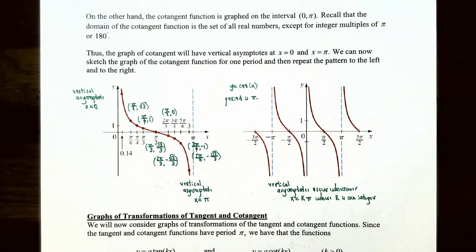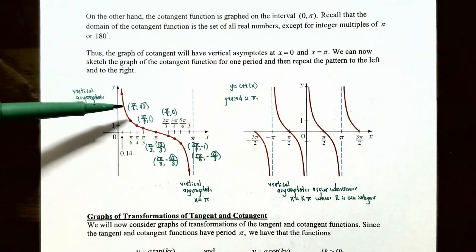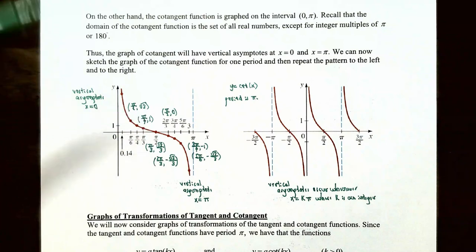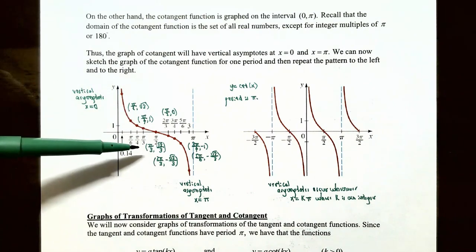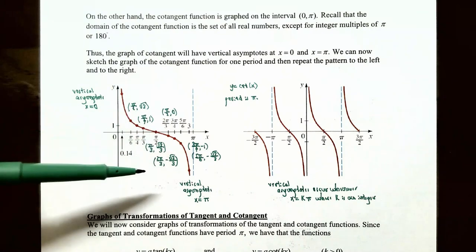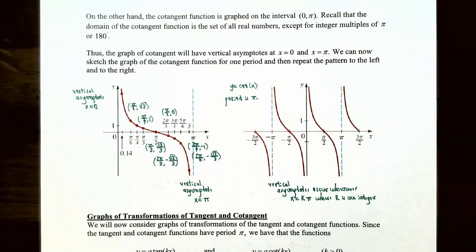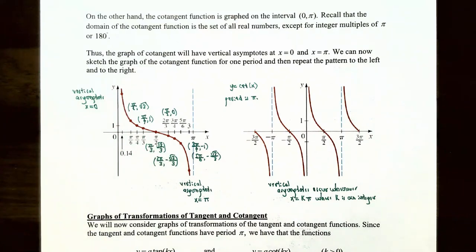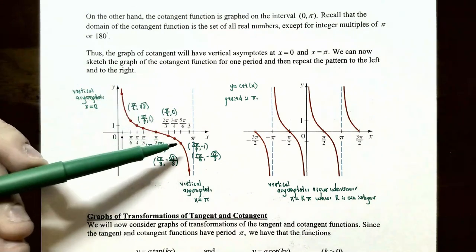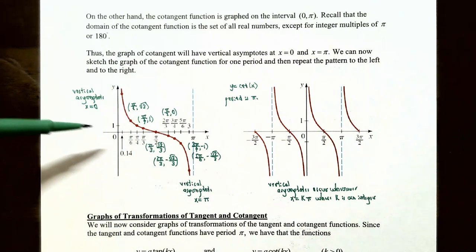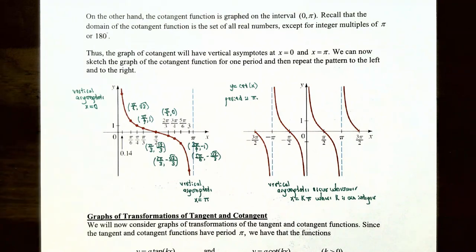Generating a table of values for the cotangent function between x = 0 and x = π: cot(π/6) = √3; cot(π/4) = 1 (reciprocal of tan(π/4)); cot(π/3) = √3/3; cot(π/2) = 0; cot(2π/3) = −√3/3; cot(3π/4) = −1; cot(5π/6) = −√3/3. You obtain these output values by evaluating the tangent function and taking the reciprocal. Drawing a curve through these points gives the graph of y = cot(x): the graph increases without bound as x approaches 0 from the right, and decreases without bound as x approaches π from the left. This is one complete period of the cotangent function — the period is π radians — and the pattern continues every π radians.